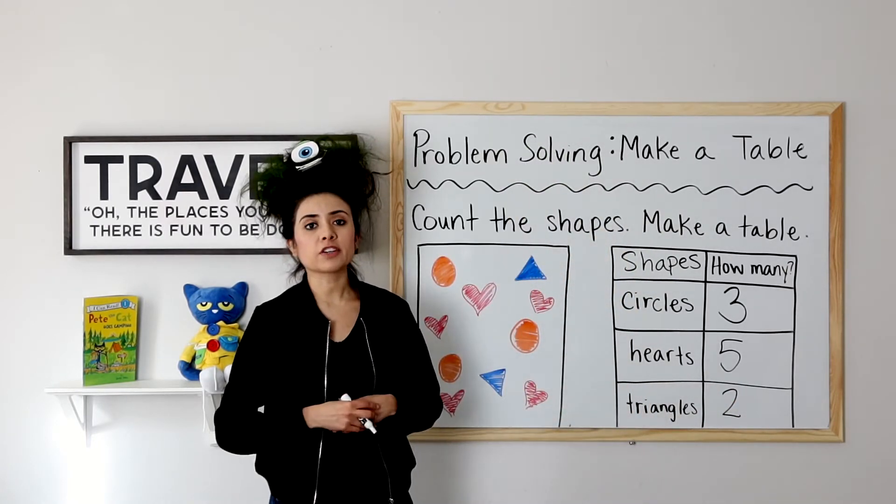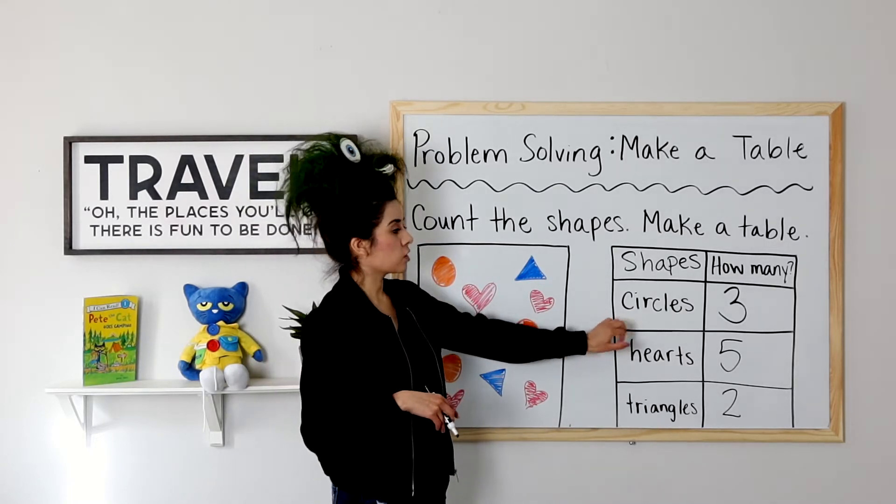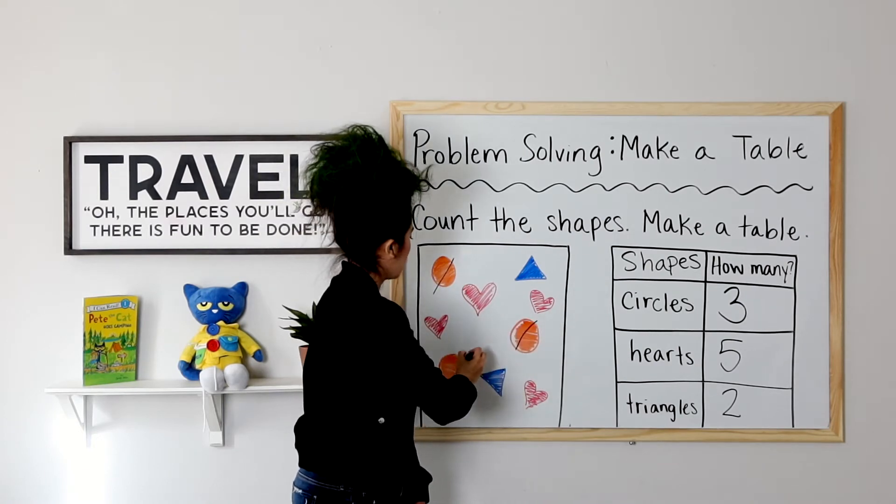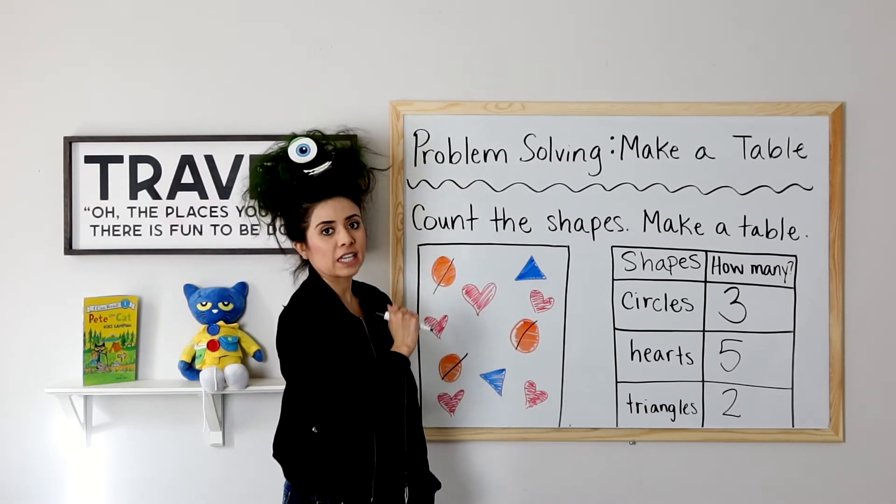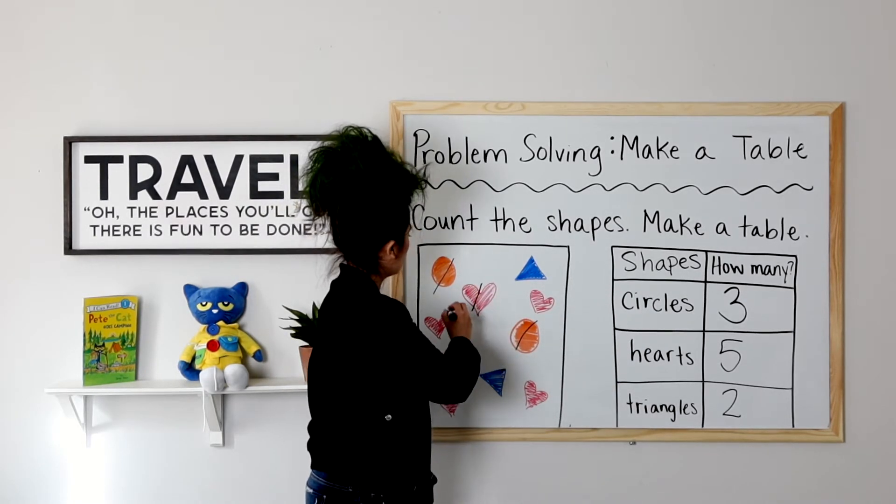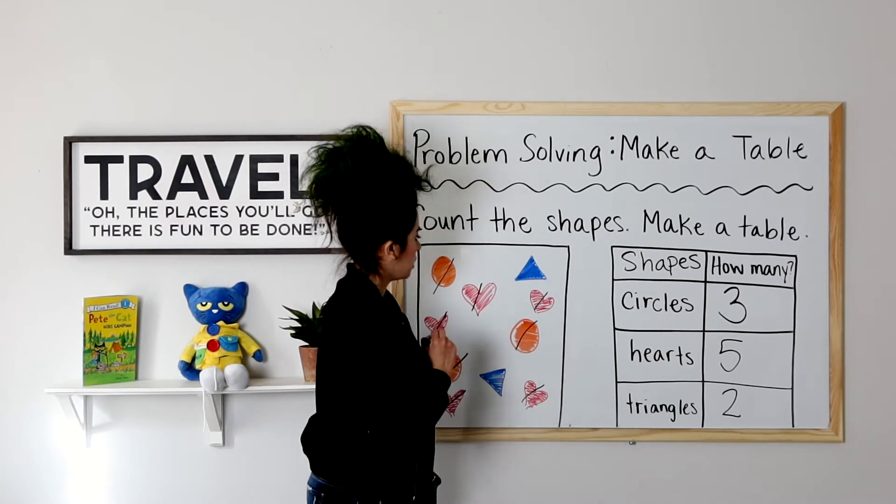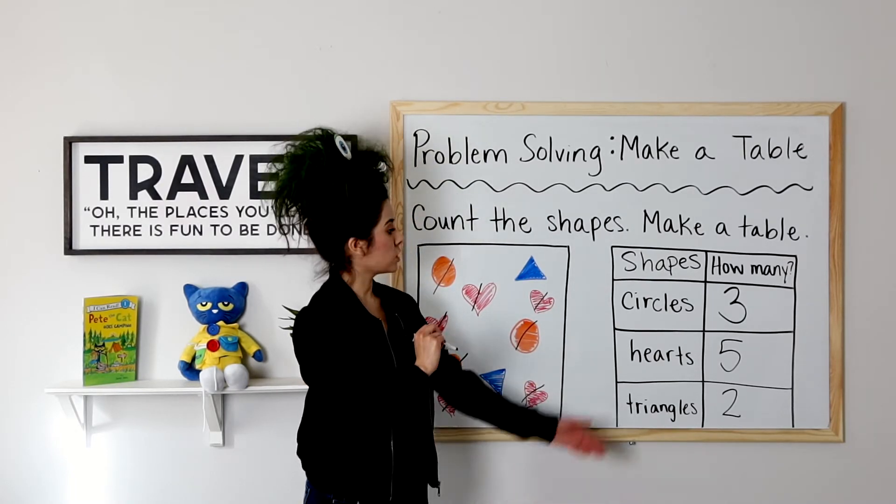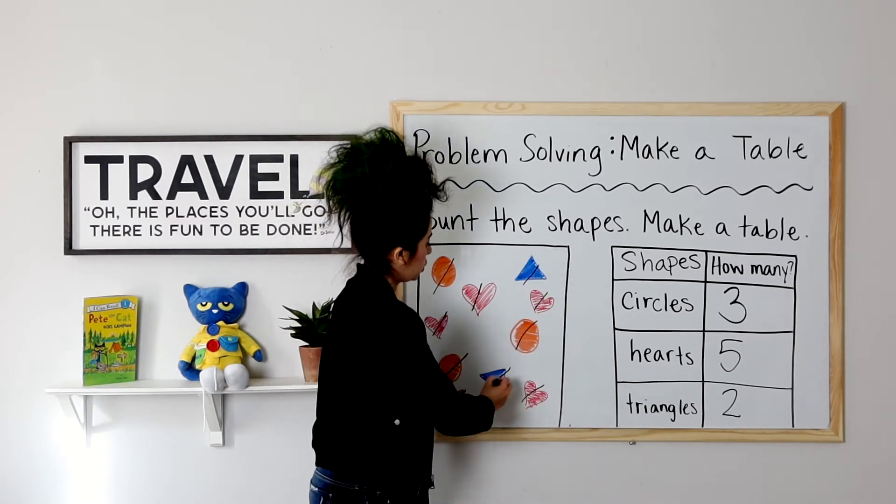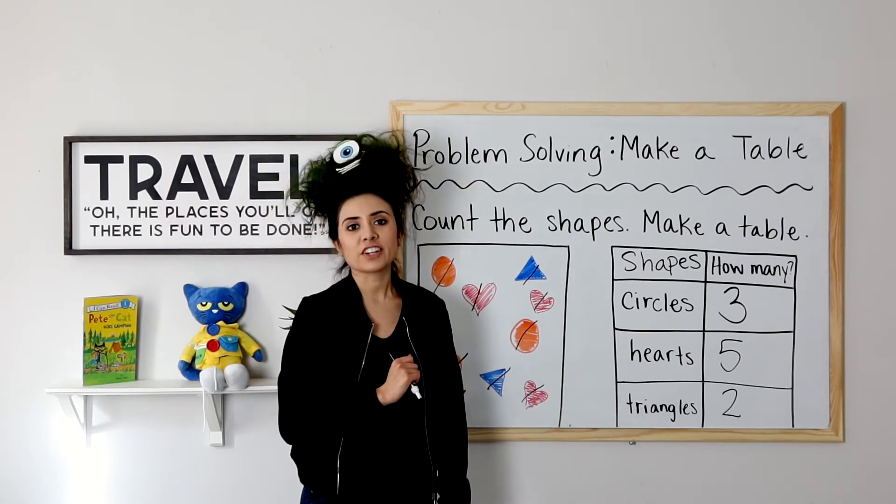To make sure you're counting correctly, something you could do is cancel out as you count. So if I were counting my circles, I could say one, two, three. No more to cancel out, so I stop at three. Hearts. One, two, three, four, five. No more to cancel out, so stop at five. And triangles. One, two. No more to cross out, so I stop at two. Very good.